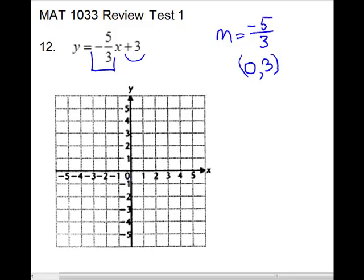Plot your y-intercept first. So over 0, up 3. Make a point. From that point, count with your slope. We're going to go down 5 spaces. 1, 2, 3, 4, 5. And then we're going to the right 3 spaces. 1, 2, 3. Make a new point. And then you will connect the dots to draw your line.